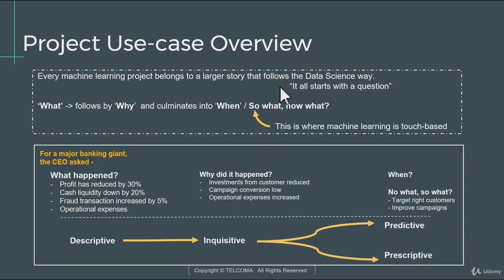This is a very abstract way to understand the overview of the project, so let's carry it to something more tangible. The machine learning project is not actually the origin of any problem. The origin of any problem will actually start right from the top of the leadership team.